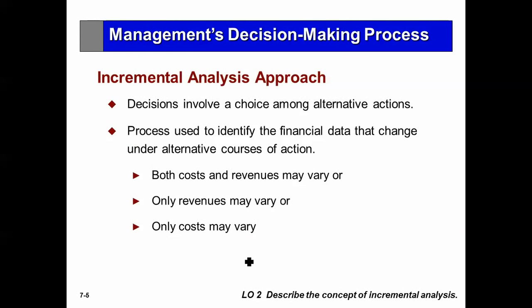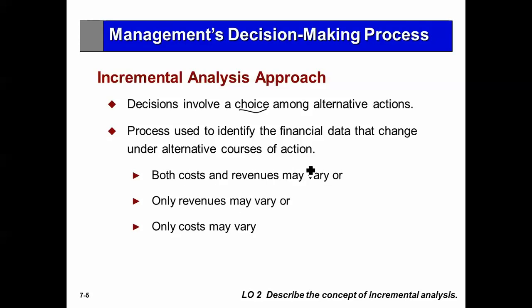A way of going about choosing between two alternatives is to identify the financial data that is relevant to the alternatives. Financial data is that which changes under alternative courses of action. We're talking both costs and revenues. Sometimes only costs will vary, sometimes only revenues, sometimes both.